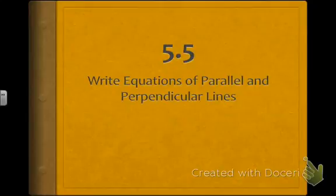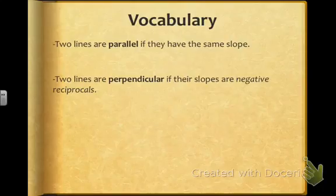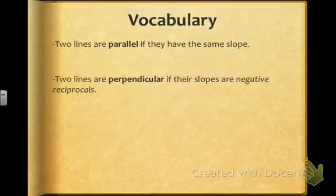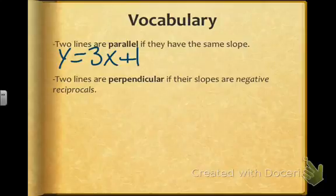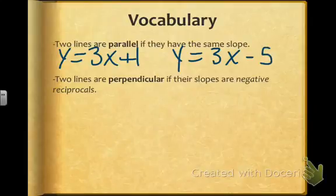Section 5.5 is all about writing equations of parallel and perpendicular lines. We have actually talked about parallel lines already, but just to remind you, two lines are parallel if they have the same slope. For example, y equals 3x plus 1 would be parallel to the line y equals 3x minus 5 because they have the same slope.